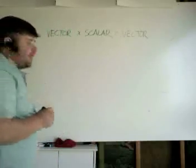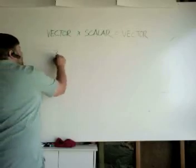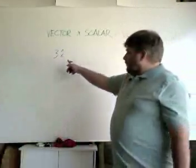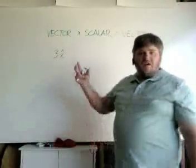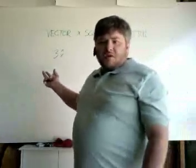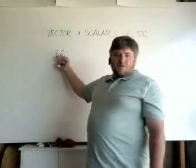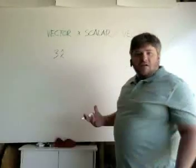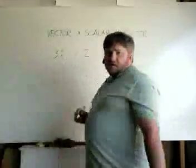So a vector times a scalar. So let me give an example of a vector. Let's say I have 3x hat. Now, if you remember, that x hat just denotes that I'm going 3 in the x direction with some sort of magnitude. In the case of, let's say, position or velocity, I'm traveling at 3 meters per second in the x direction. Now, if I wanted to double that, I'm going to multiply it by a scalar times 2.